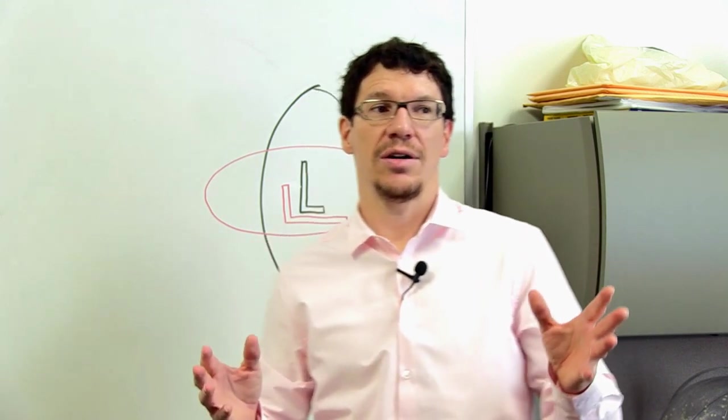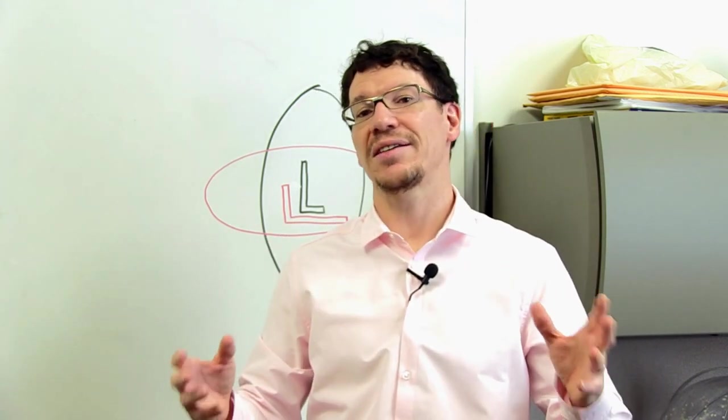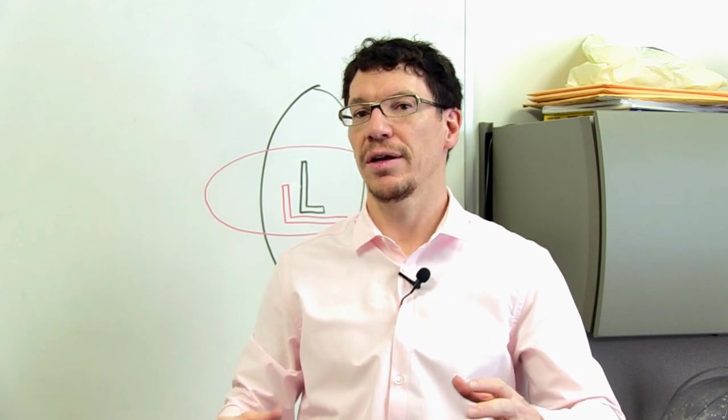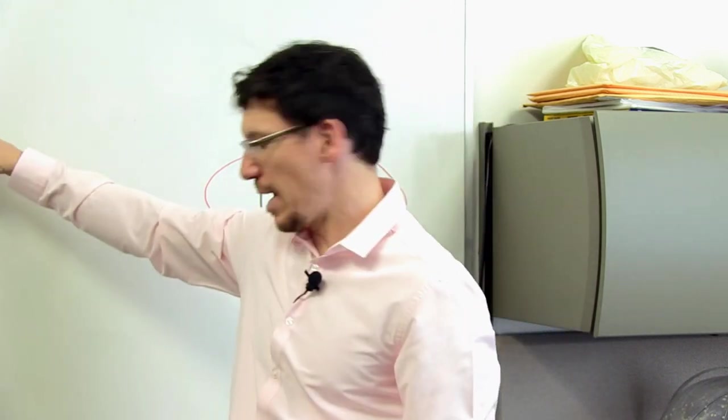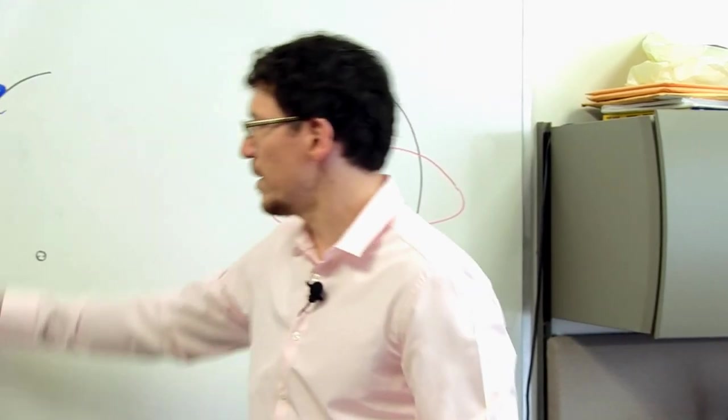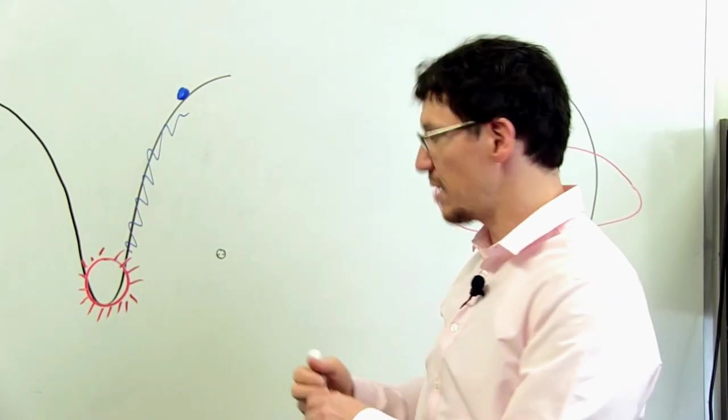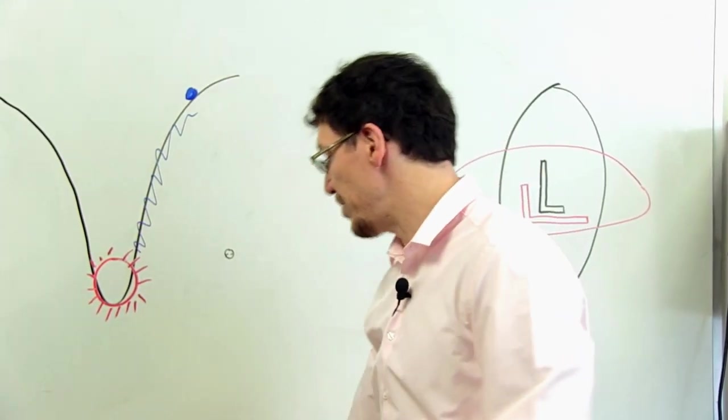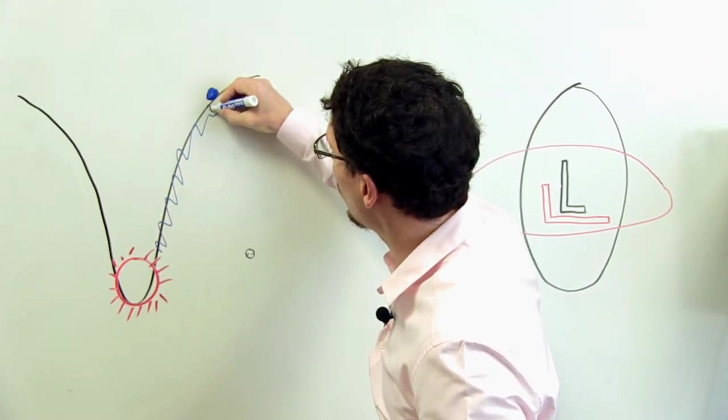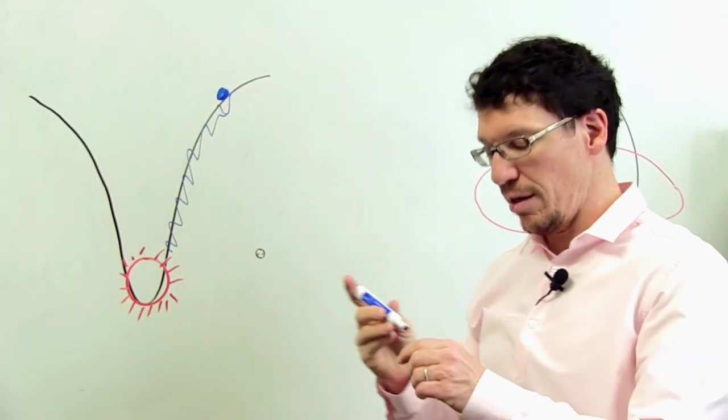It turns out that general relativity even has an effect right here on Earth. So if we go back to our diagram here, the sun creates a gravitational well in the vicinity of the entire solar system. But the Earth is also a massive object. And so it actually creates a small gravitational well of its own around itself.